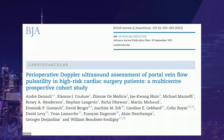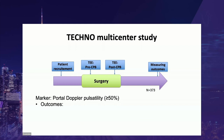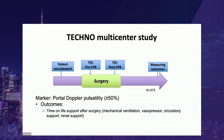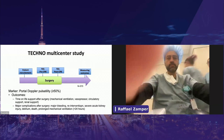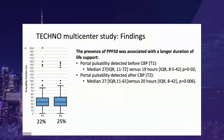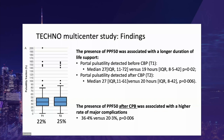A subsequent multicentre prospective study led by Dr. Beaubien-Sauigny was also published in the British Journal of Anaesthesia in 2022. The association between portal Doppler pulsatility before and after cardiopulmonary bypass was assessed in 373 cardiac surgery patients. Outcomes included time on life support and major complications after surgery: major bleeding, reintervention, severe acute kidney injury, delirium, death, and prolonged mechanical ventilation. The presence of a portal pulsatility fraction over 50% (PPF50) before or after CPB was associated with longer duration of life support, and PPF50 after CPB was associated with a significantly higher rate of major complications — 36.4% versus 20.3%.